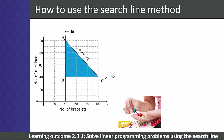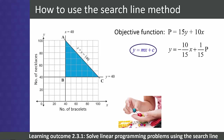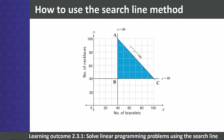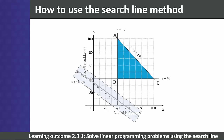Let's draw the search line for the beadwork example. Our objective function was P equals 15y plus 10x. Rearranging into the form y equals mx plus c gives us y equals negative two-thirds x plus p over 15. Thus the gradient of the search line is negative two-thirds. We draw a line with a gradient of negative two-thirds below the lowest vertex — this is our search line.